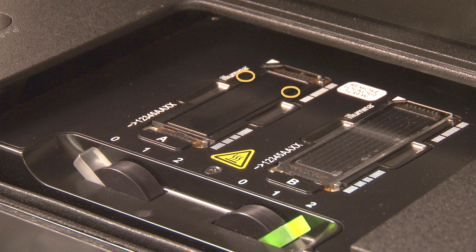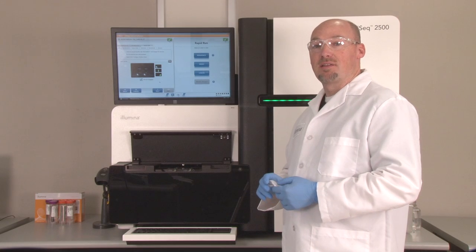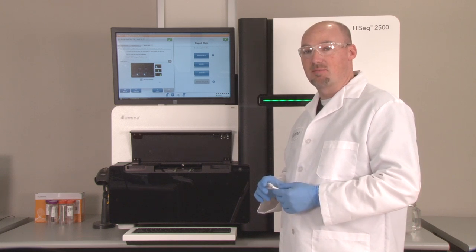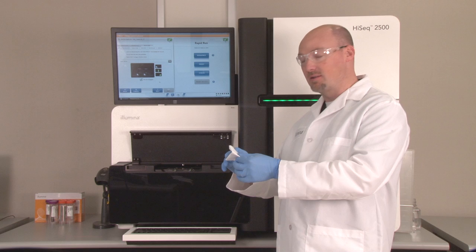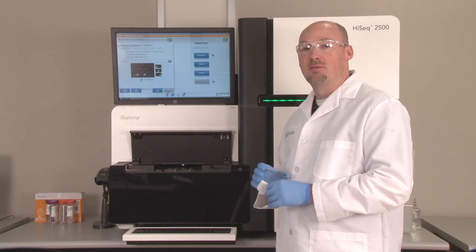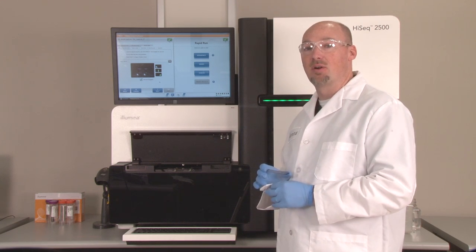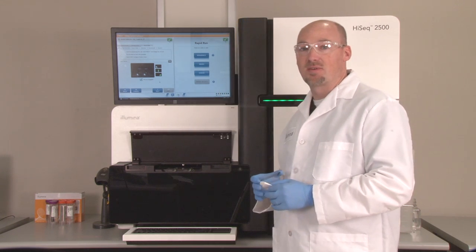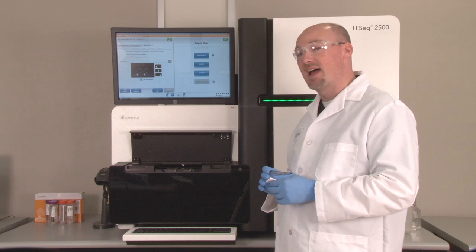Any debris in the ridges or vacuum holes can prevent the flow cell from being firmly held to the stage for the entire sequencing process. Now that the flow cell stage is clean, you are ready to load your flow cell. Follow the standard cleaning procedure with water and ethanol. Also, verify that there is no debris or adhesive substance on the flow cell itself that can transfer to the stage and prevent the flow cell from sitting flat.